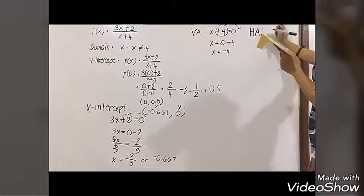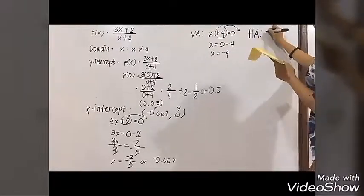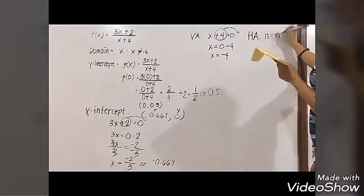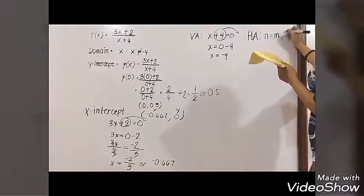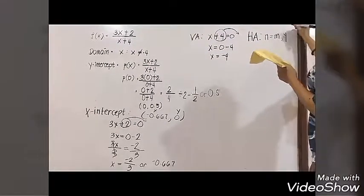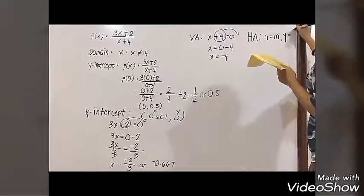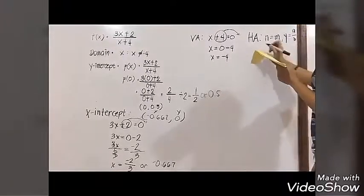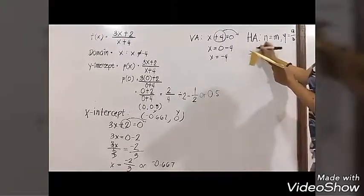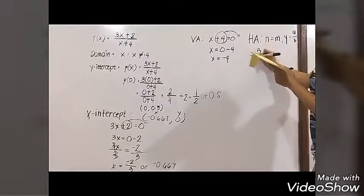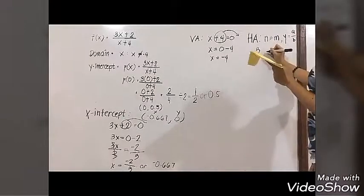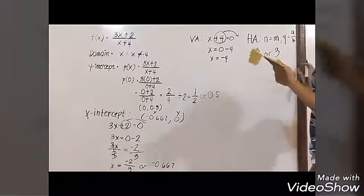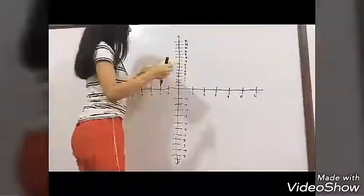In this case, n is equal to m — they both have the same degree, which is 1. So the leading coefficient of the numerator is 3, and the denominator's leading coefficient is 1. So that's 3 over 1, or simply 3. The horizontal asymptote is y equals 3.